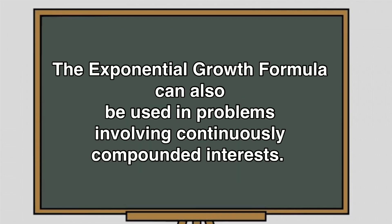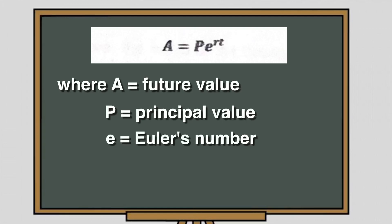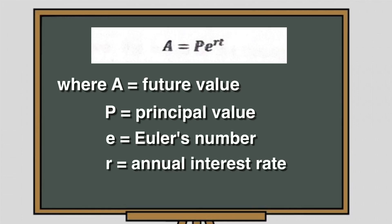Aside from predicting population growth, another use of the exponential growth formula is in computing continuously compounded interests, where A is the future value, P is the starting or principal value, E is still Euler's number equal to 2.718, R is the annual interest rate or rate per year, and T is the time expressed in years.